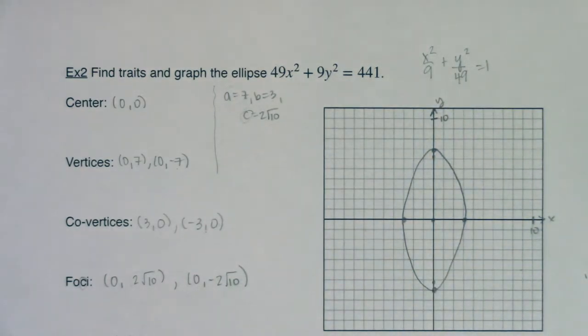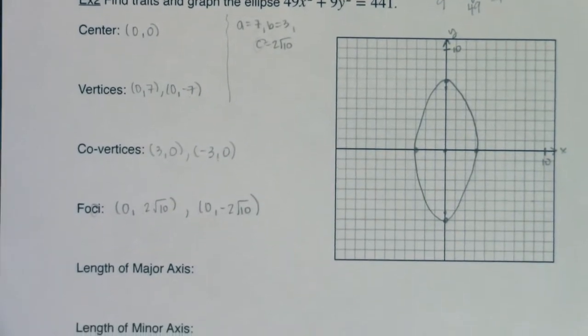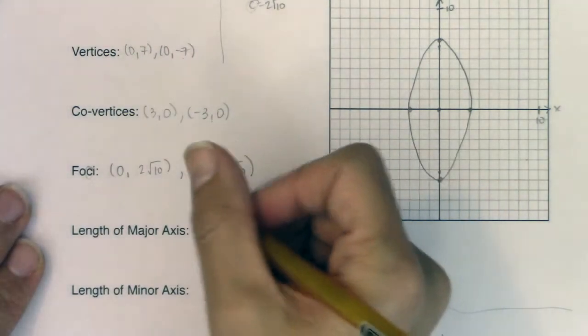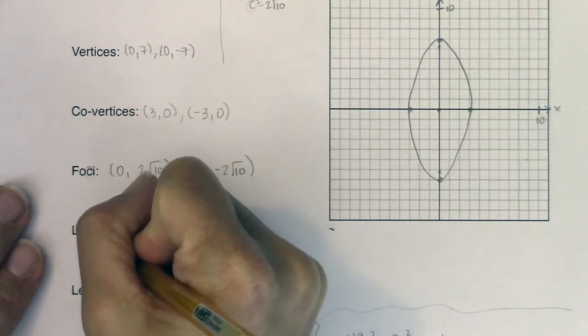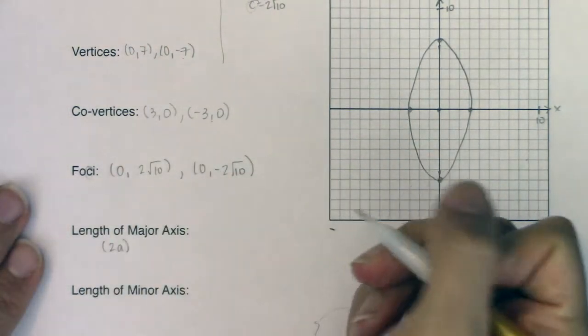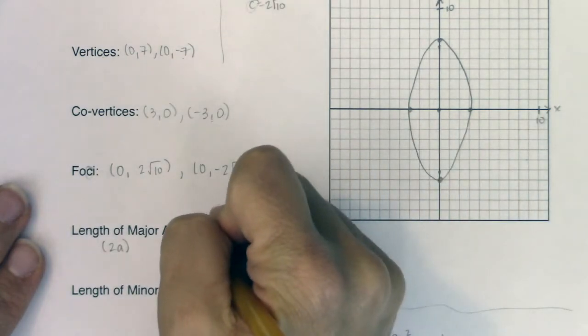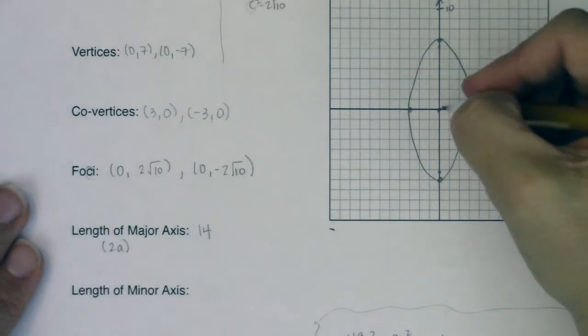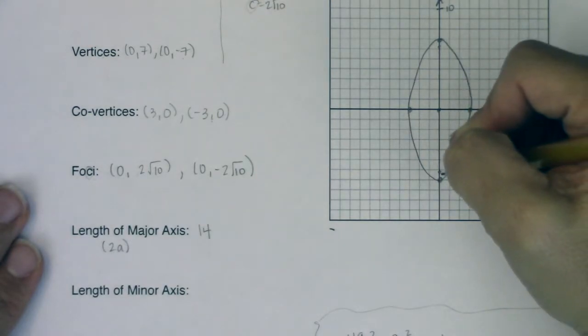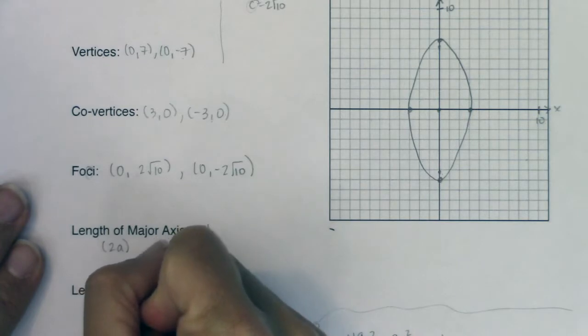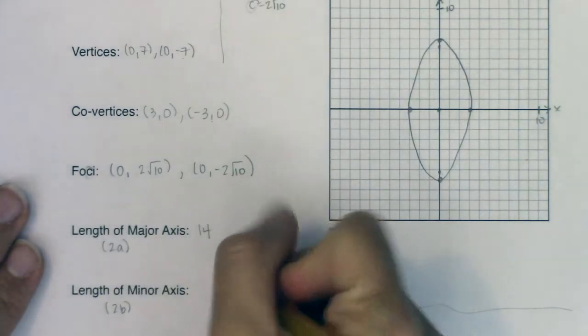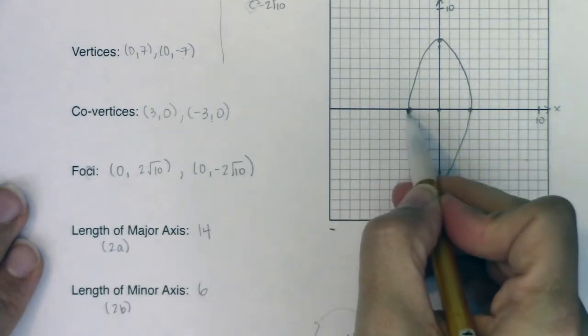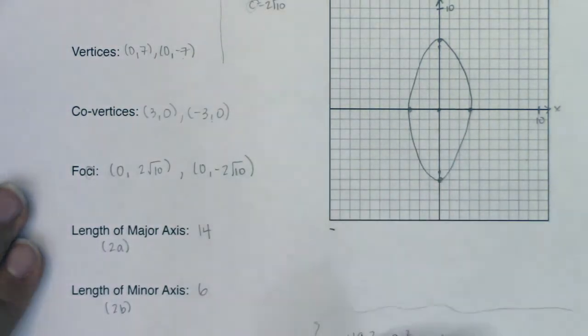Now this is asking for the length of the major axis. The length of the major axis is always 2A units. Well, A in this case was 7, so the length of the major axis is 14. Because I went 7 units here, 7 units here. The length of the minor axis is always 2B units. In this case, B was 3, so 2 times 3 is 6. Because I went 3 plus 3, 6 units.